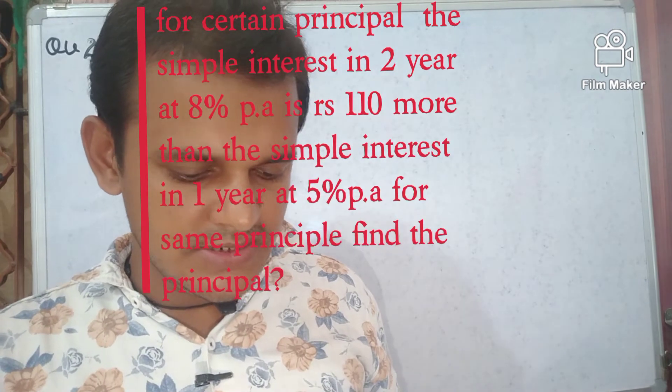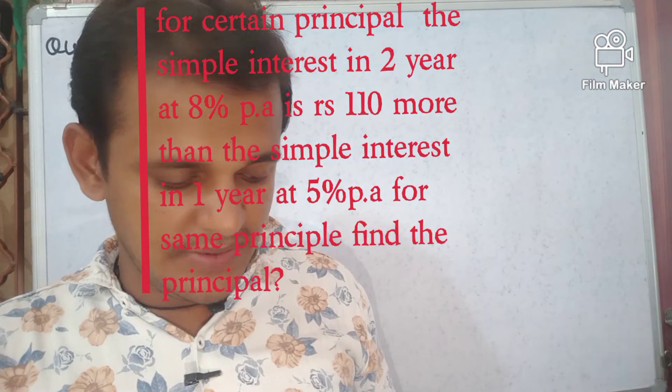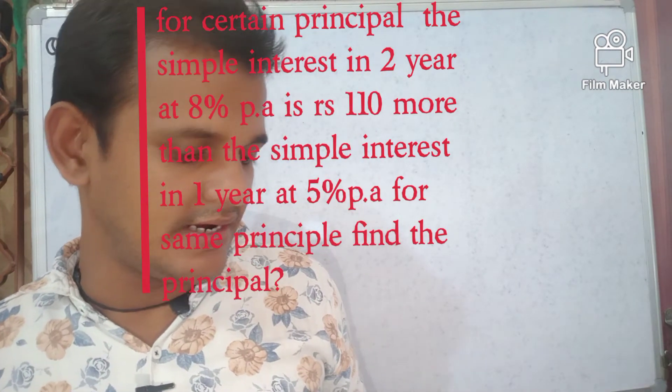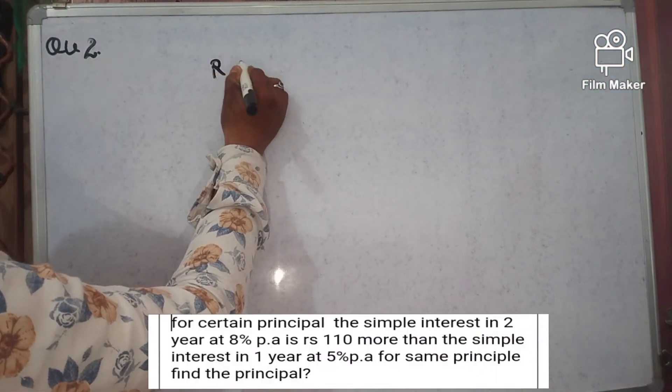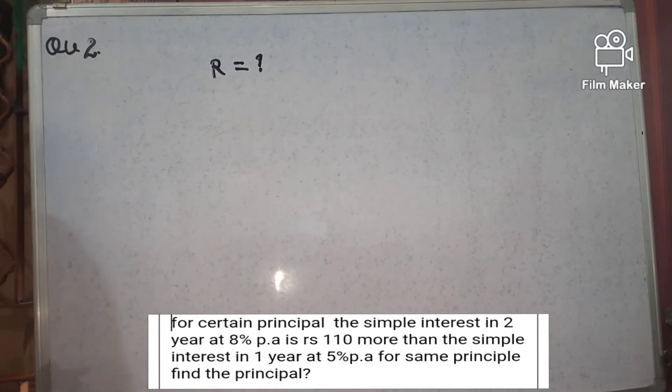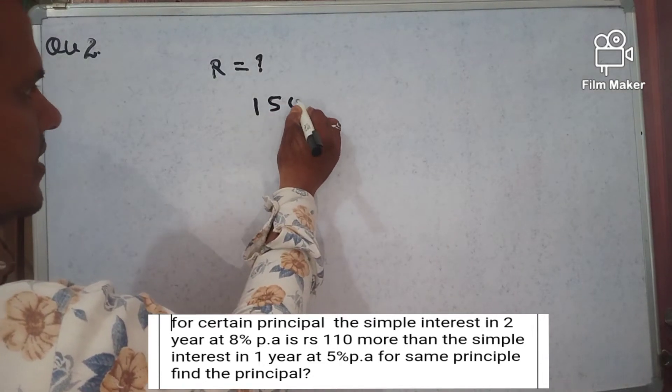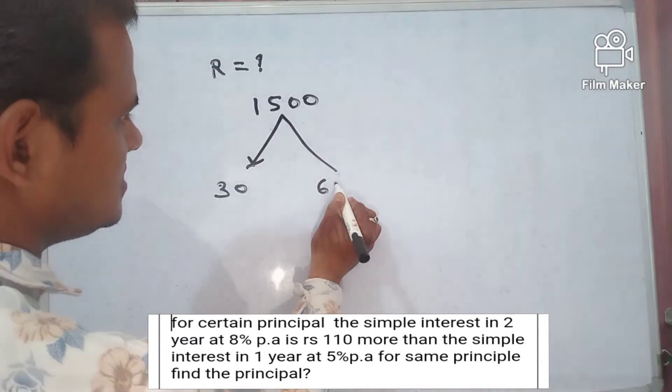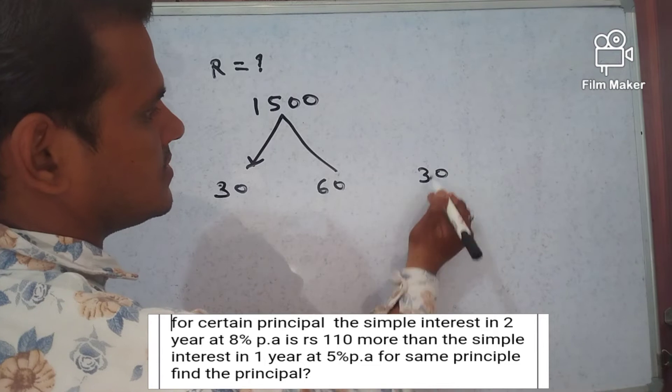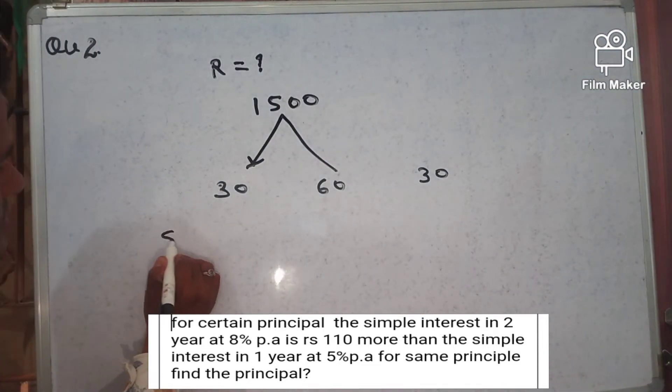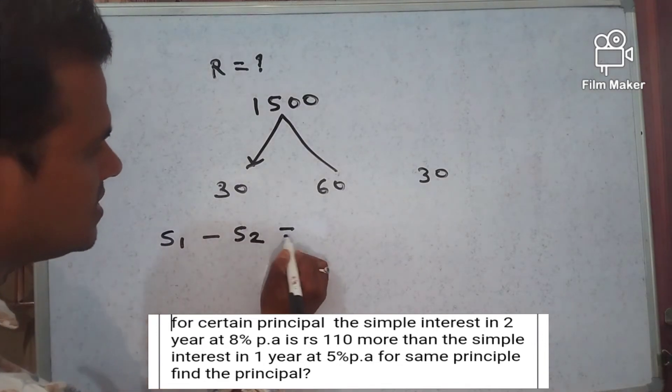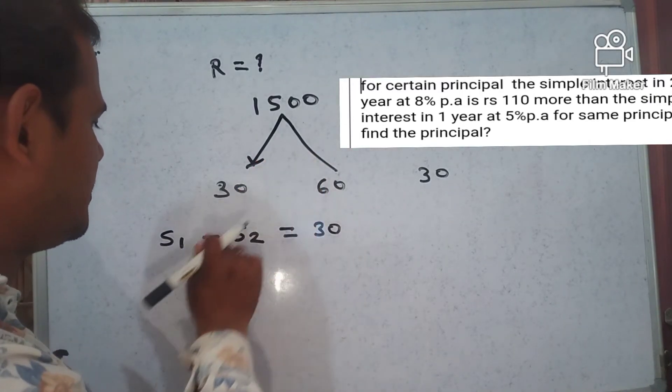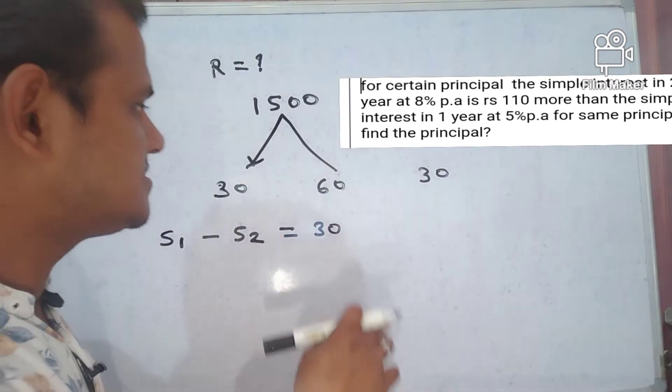Move to question number two. Question number second is: simple interest for a principal of Rs 1500 is Rs 30 in 4 years and Rs 60 in 8 years. Find the rate. So our target is only what is the rate. Principle is given Rs 1500 in 4 years comes Rs 30 and after 8 years comes Rs 60. The difference is only 30.